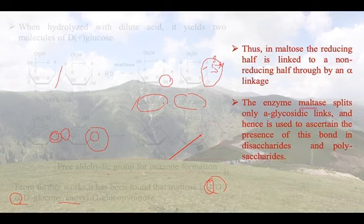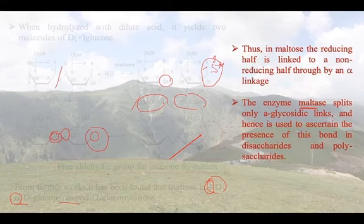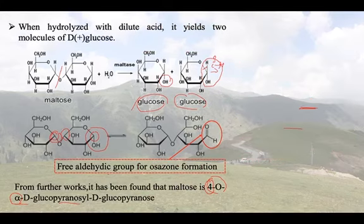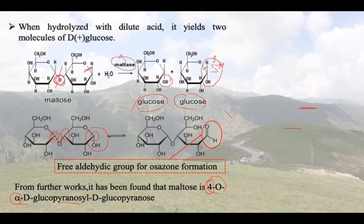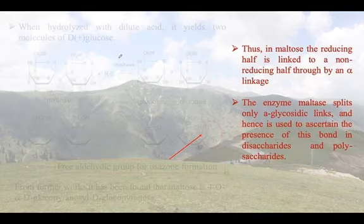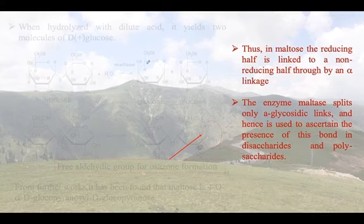The enzyme maltase specifically cleaves only the alpha glycosidic linkage. We use maltase because it does not cause ring opening — other hydrolysis methods might open the ring. Since we need to hydrolyze only the glycosidic linkage, we use the enzyme maltase. This indicates that the enzyme maltase is used to ascertain the presence of this glycosidic bond in disaccharides and polysaccharides.